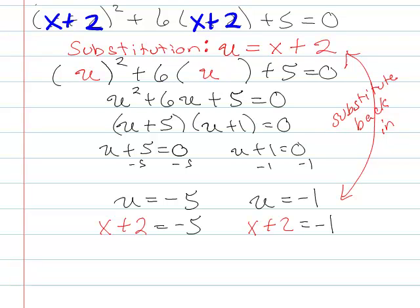So I've got x plus 2 equals negative 5. So I'll subtract 2 off of both sides and get x equals negative 7. Or x plus 2 equals negative 1, subtract 2 off of both sides and get x equals negative 3.